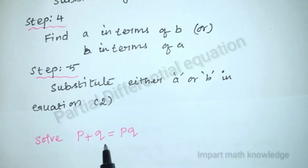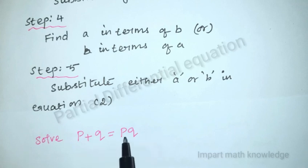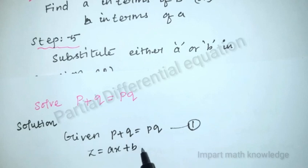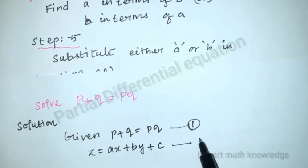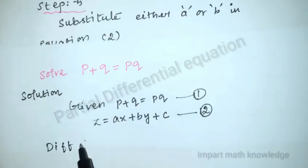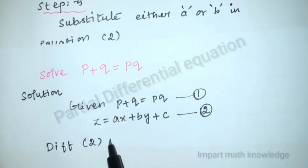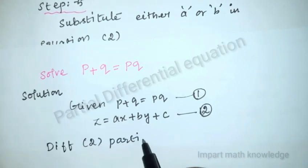Now we will solve some problems for a clear idea. Problem: solve p + q = pq. First check the type — this equation contains p and q terms only, so we assume z = ax + by + c. Differentiate this partially with respect to x and y.